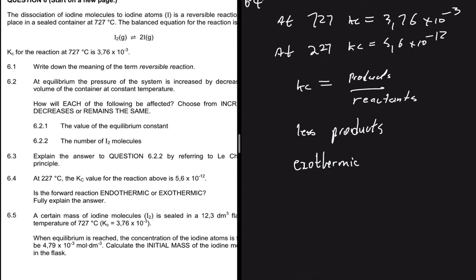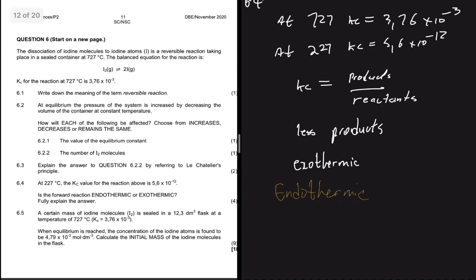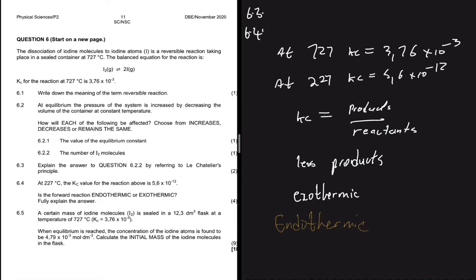The question asks whether the forward reaction is endothermic or exothermic. Since the reverse reaction is exothermic — favored by a decrease in temperature — the forward reaction is consequently endothermic. When explaining your answer, write down the Kc values, note that Kc equals products over reactants, and show that decreasing temperature reduces products, so the reverse reaction is favored, which is exothermic, making the forward reaction endothermic.